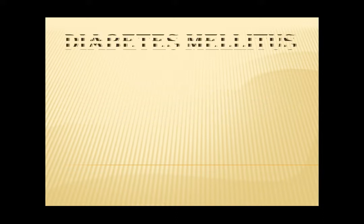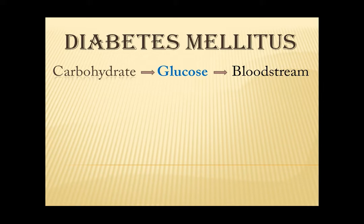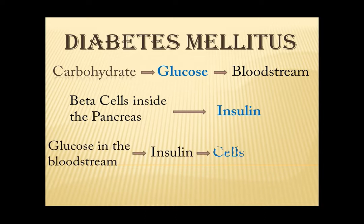Normally, when we eat a carbohydrate, your body will convert it into the form of sugar called glucose. Then it will go into the bloodstream. Since it cannot go alone into the cells, the pancreas, specifically the beta cells, will release insulin. Insulin is a hormone that will facilitate the glucose from your bloodstream to go inside your cells so that it can now be used for energy. That is the normal flow of glucose and insulin inside your body.